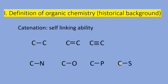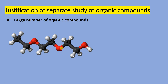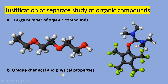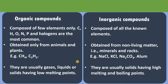Now we will see why there is a need for the separate study of organic chemistry. Compared to compounds of other elements, the number of organic compounds is very large. Organic compounds comprise 90% of all known compounds. Therefore, we need to study them separately. Additionally, they have unique chemical and physical properties. Due to these two important reasons there is a need for the separate study of organic compounds.